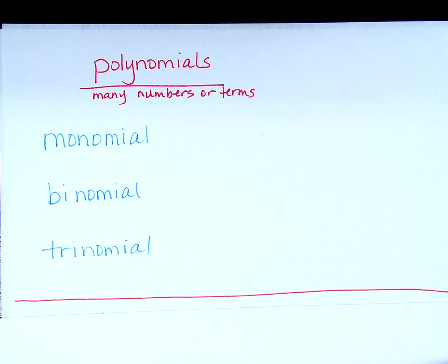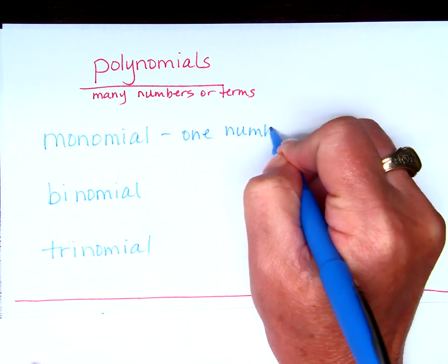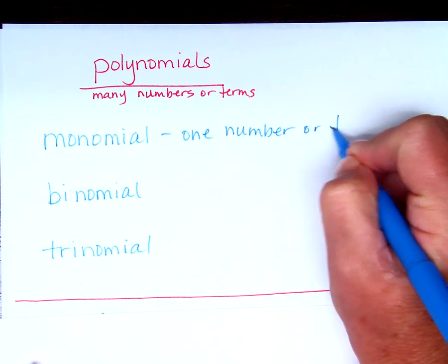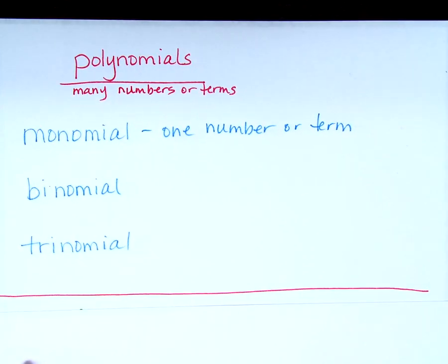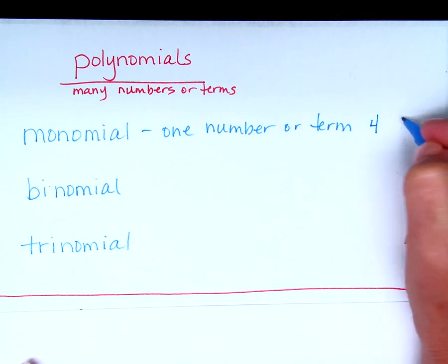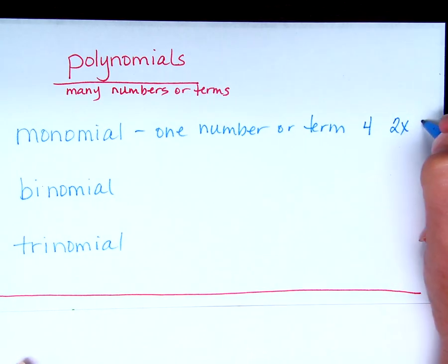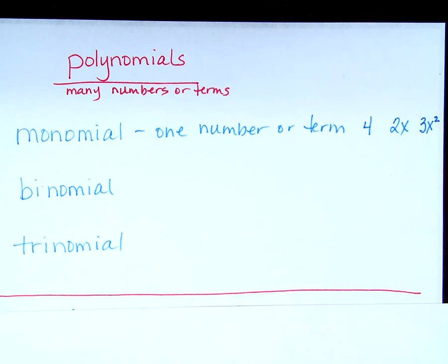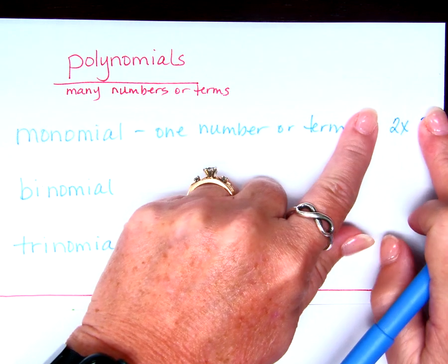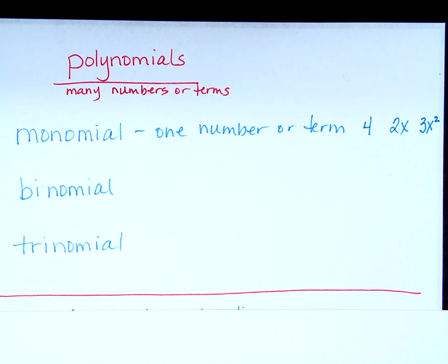So what about monomial? What does that mean? One number or term. Like what? Four, 2X, 3X squared. Do you see how those are all monomials? It's one number or term. Those are all examples of monomials.